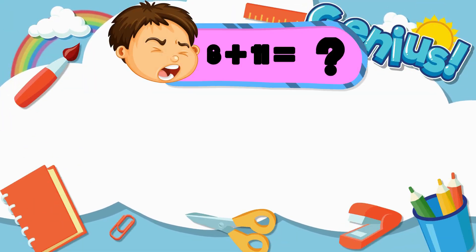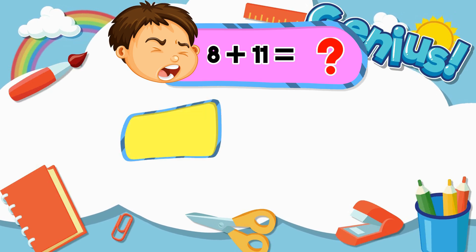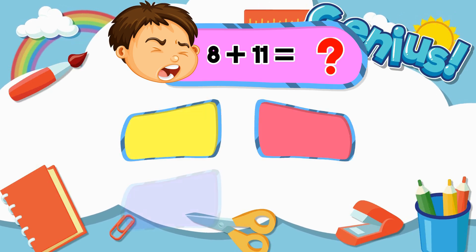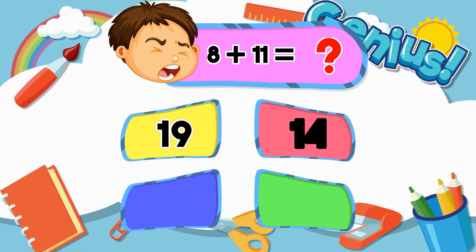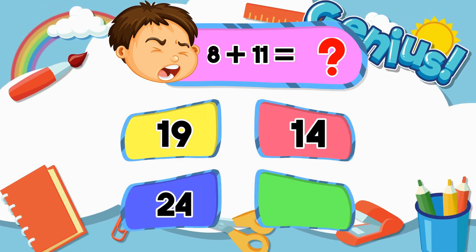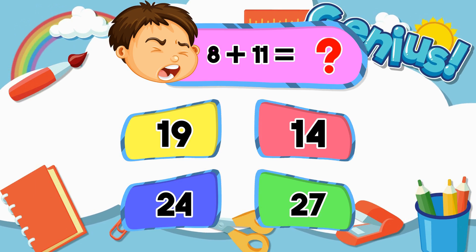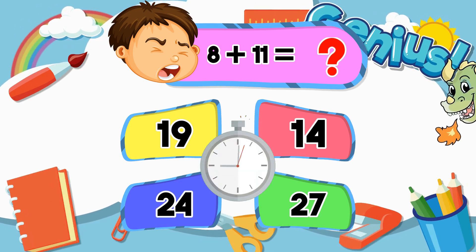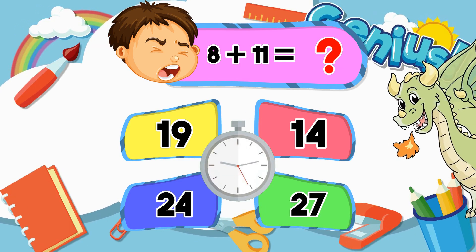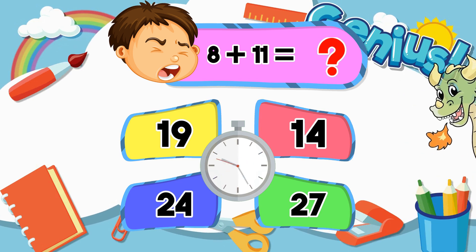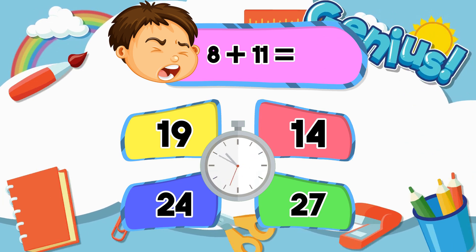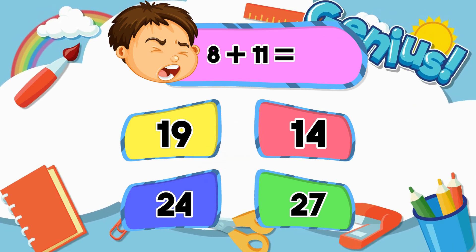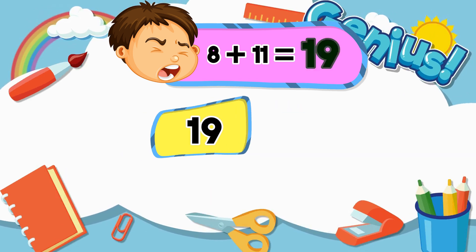What is 8 plus 11? 19, 14, 24, 27. The answer is 19.